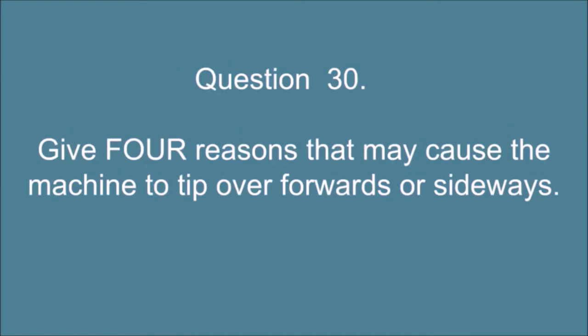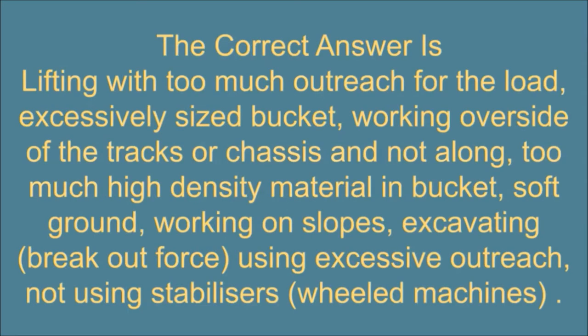Question 30. Give four reasons that may cause the machine to tip over forwards or sideways. The correct answer is: lifting with too much outreach for the load, excessively sized bucket, working over side of the tracks or chassis and not along, too much high density material in bucket, soft ground, working on slopes, excavating, breakout force, using excessive outreach, not using stabilizers, wheeled machines.